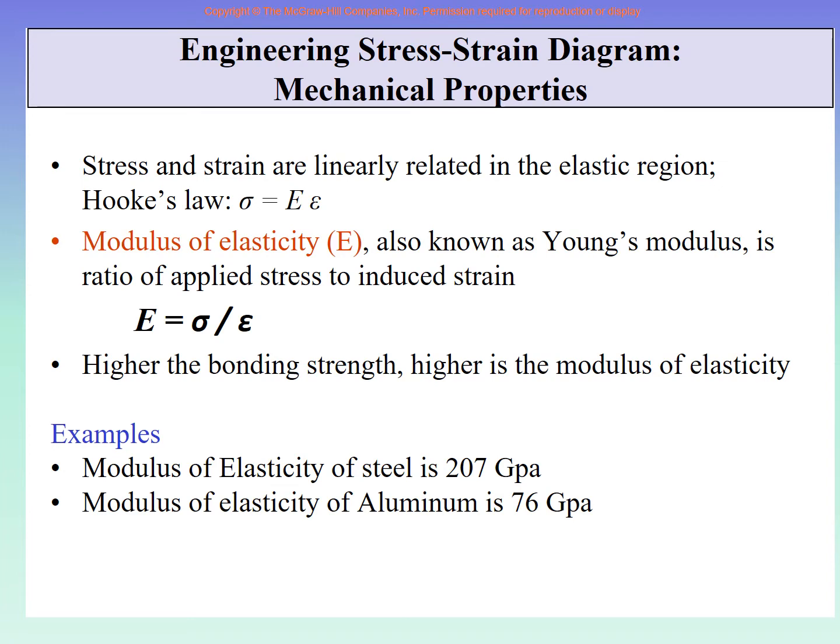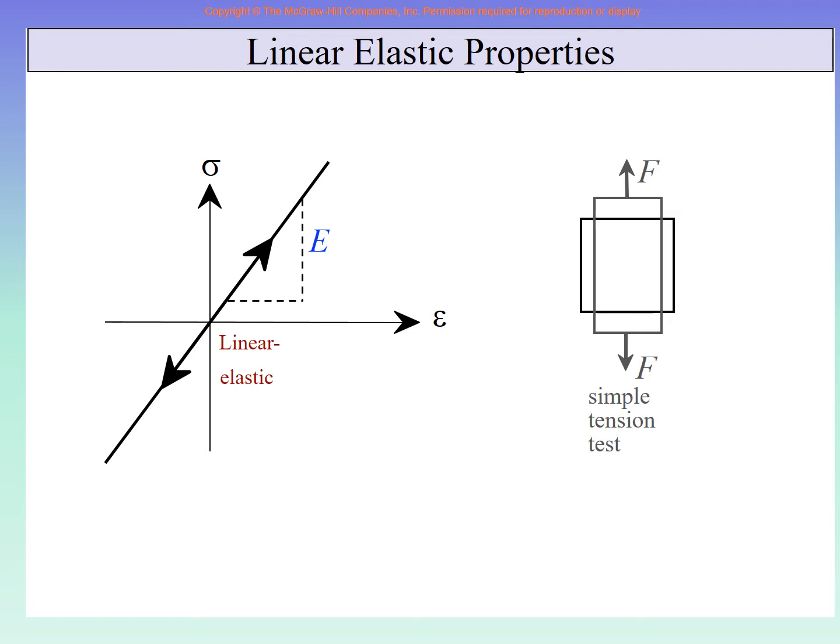So modulus of elasticity is the first material property that we can derive from the stress strain diagram. So this is we are just again explaining to you that the original piece was this the length was changed. We plotted the stress against strain. We take any two points, then the stress here and the strain here, this ratio is the Young's modulus or slope of the material.